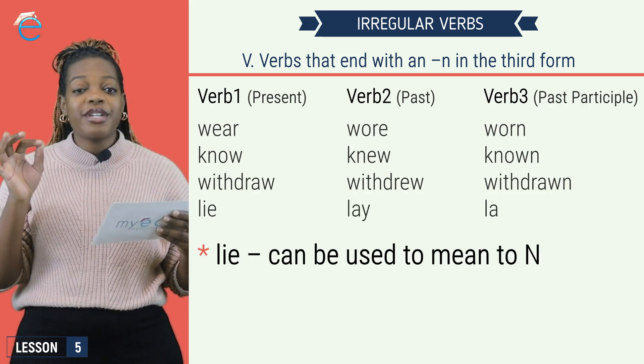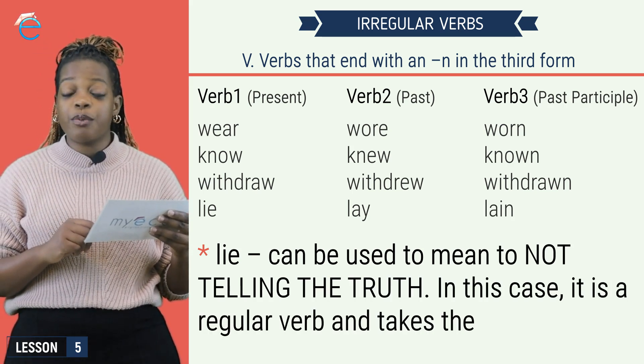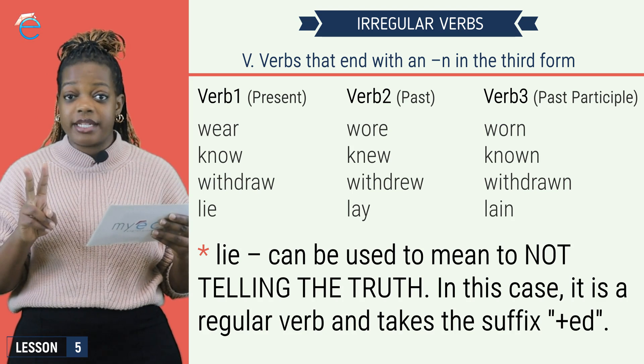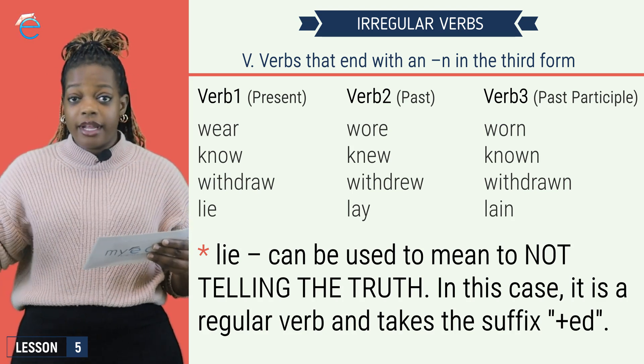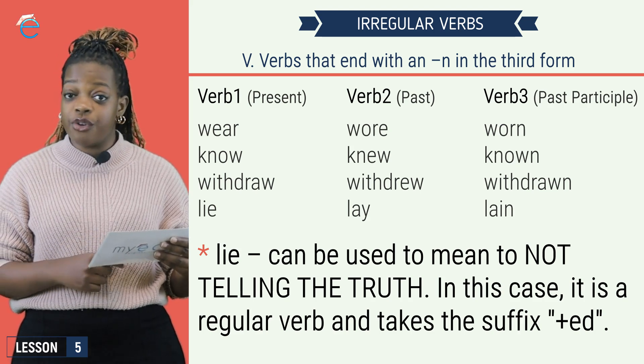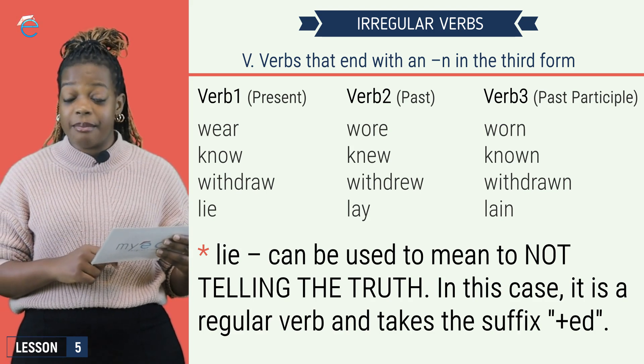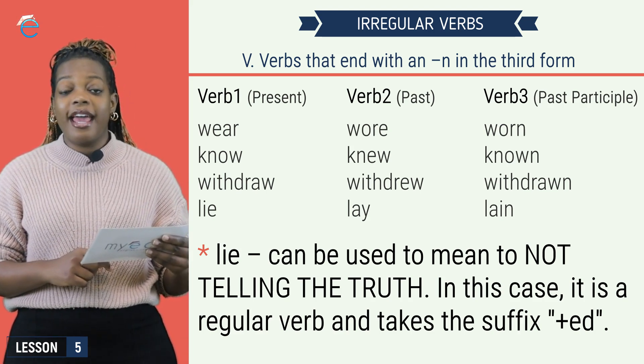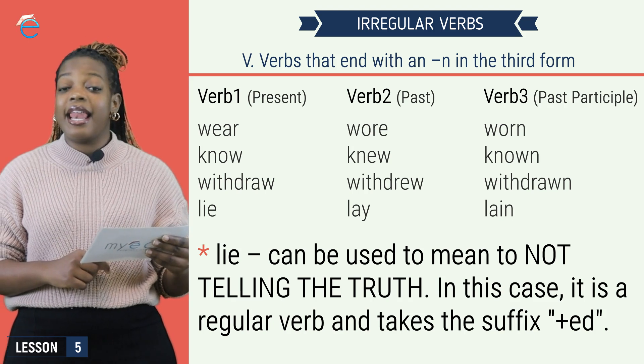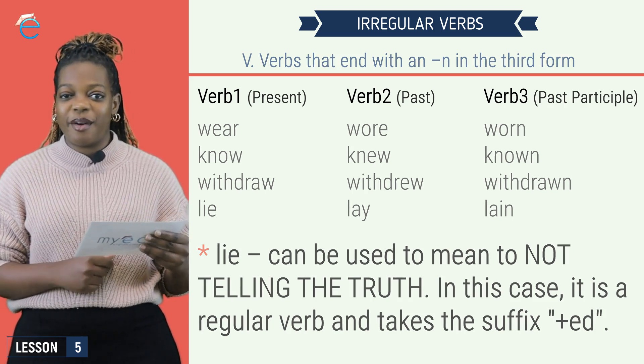An important mention for our last one, lie can also be used in two ways. Lie down and lie as in to say something untrue. If I am using lie as in to say something untrue, then I can just say lied, ed, like a regular verb.